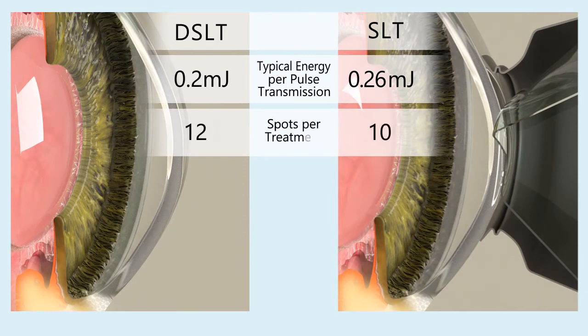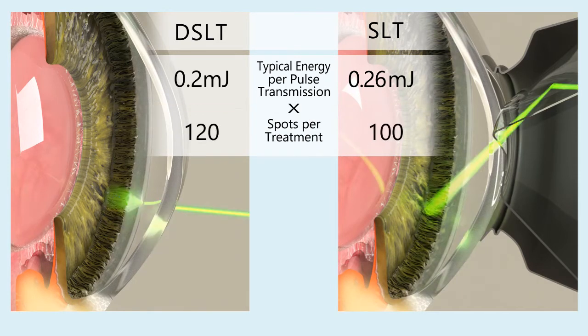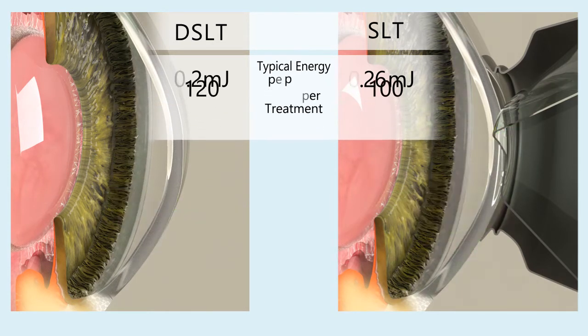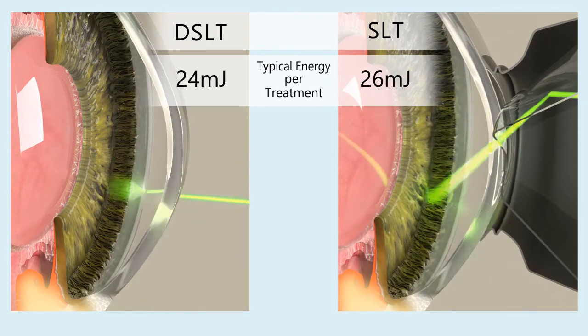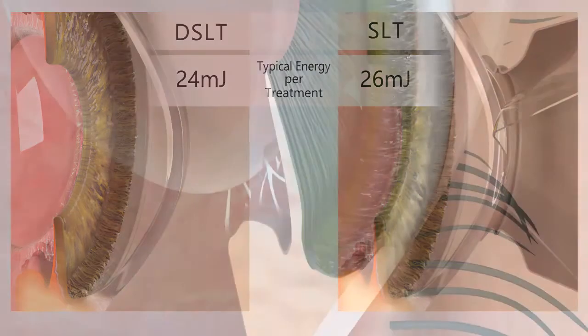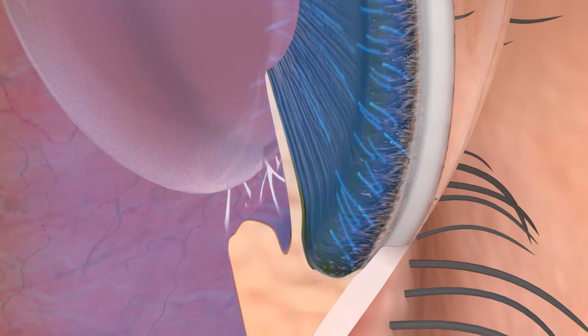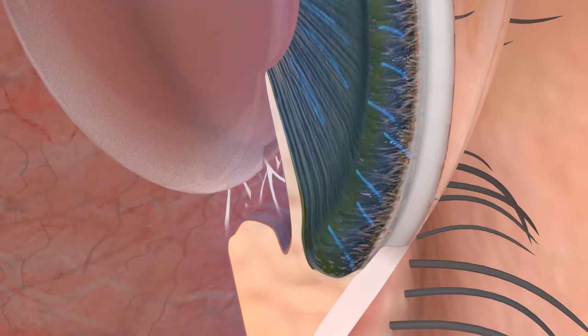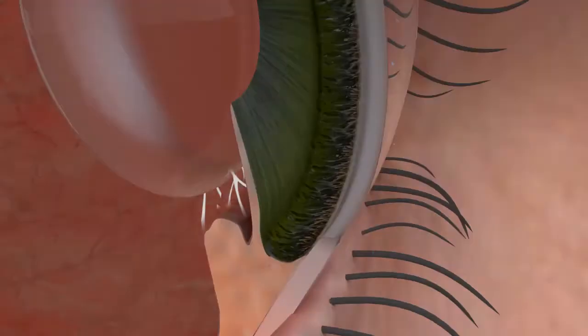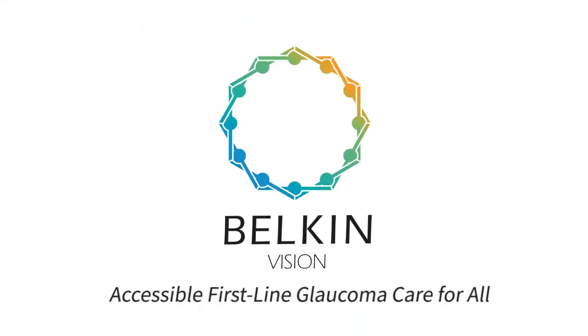Multiplying this energy by the number of spots per treatment would result in a similar total energy reaching the trabecular meshwork in both therapies. The resulting effect is a lowering of intraocular pressure. DSLT offers a sophisticated non-contact therapy, effective as a first-line treatment for glaucoma and OHT.